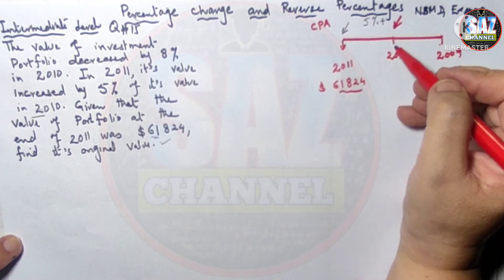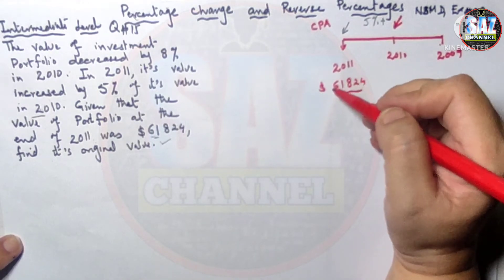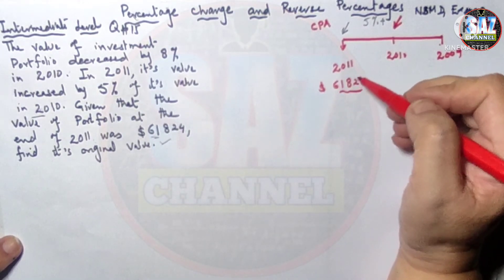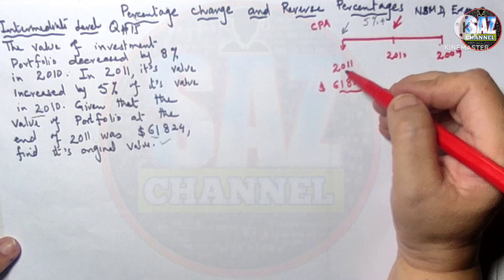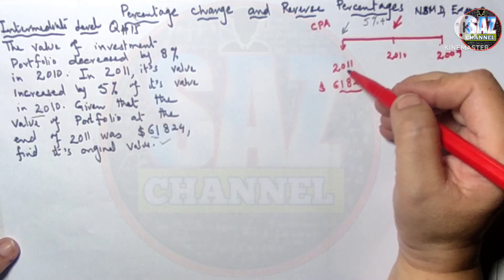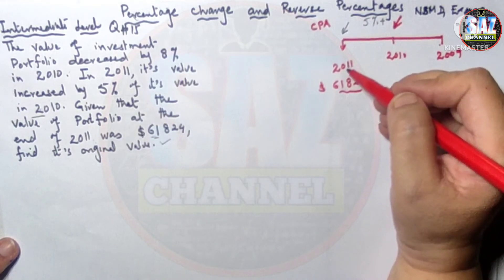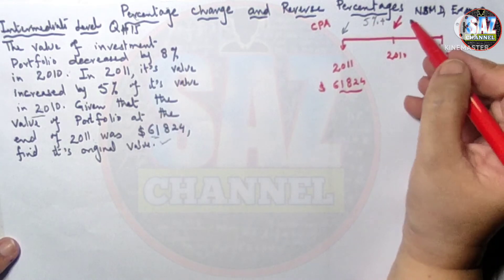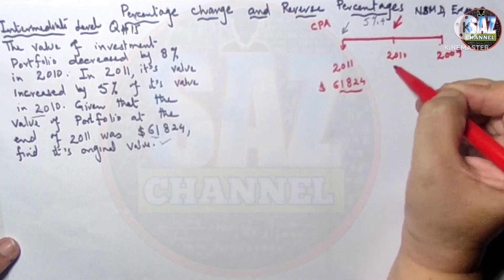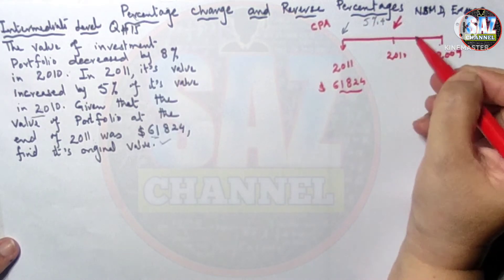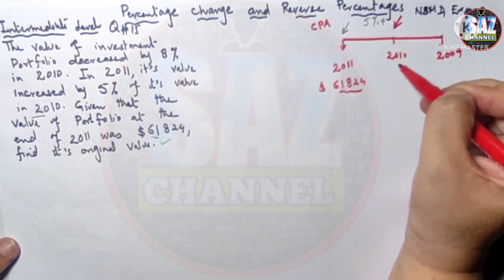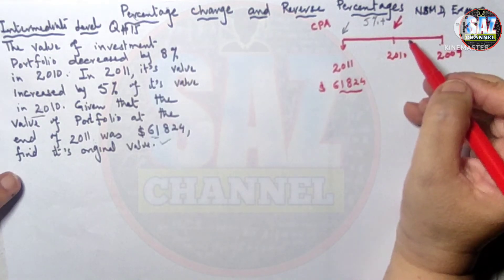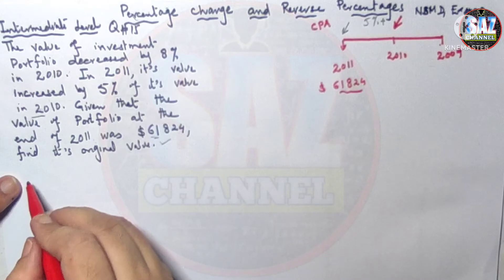First of all, using $61,824 — the value of the investment portfolio in 2011 — which is a 5% increase over 2010, we are going to find the value in 2010. Since this is a 5% increase, the 2011 value represents 105% of the 2010 value.